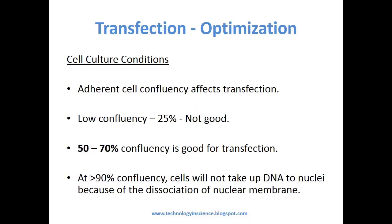Cell culture conditions: adherent cell confluency affects transfection. Low confluency of 25% is not good. A confluency of 50 to 70% is optimal for transfection. At greater than 90% confluency, cells will not take up DNA into the nucleus because of the dissociation of the nuclear membrane.